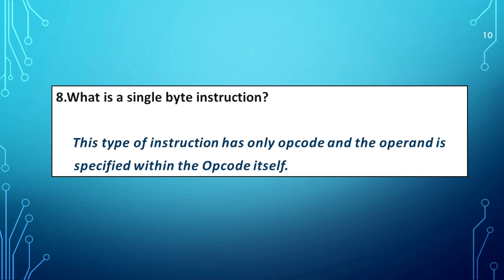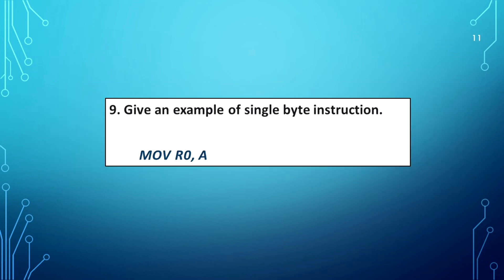What is a single byte instruction? This type of instruction has only an opcode, and the operand is specified within the opcode itself. An example of single byte instruction is MOV R0, A.